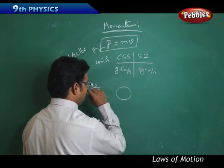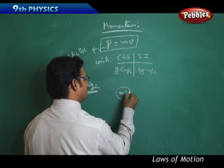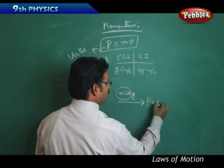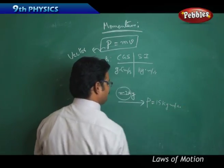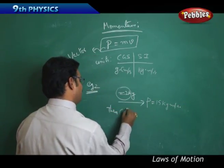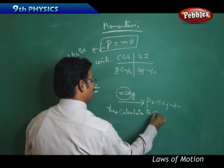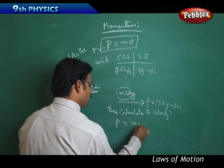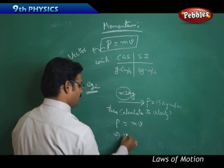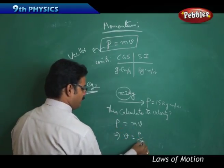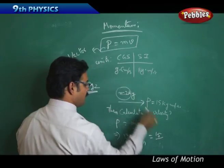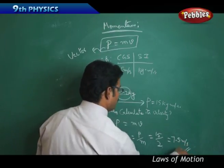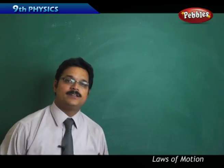Second example: a ball of mass 2 kg is moving with a momentum of 15 kg·m/s. Calculate its velocity. Using p = mv, we rearrange to get v = p/m. So velocity = 15 / 2 = 7.5 meters per second. That is the velocity of the ball. So now we understand momentum.